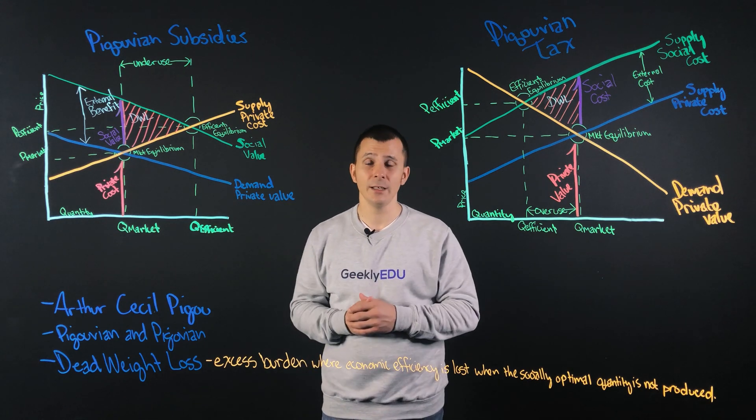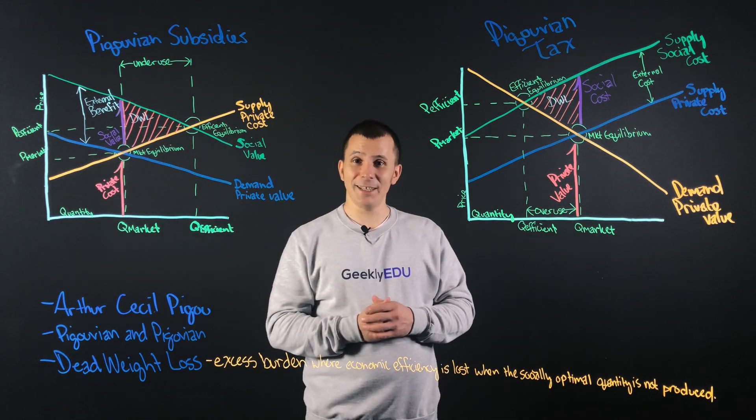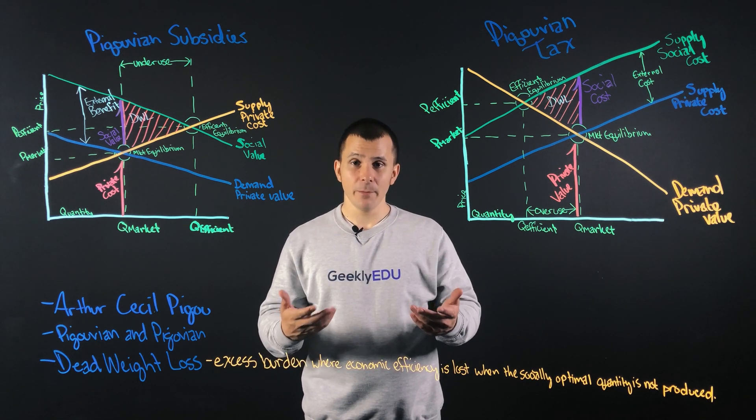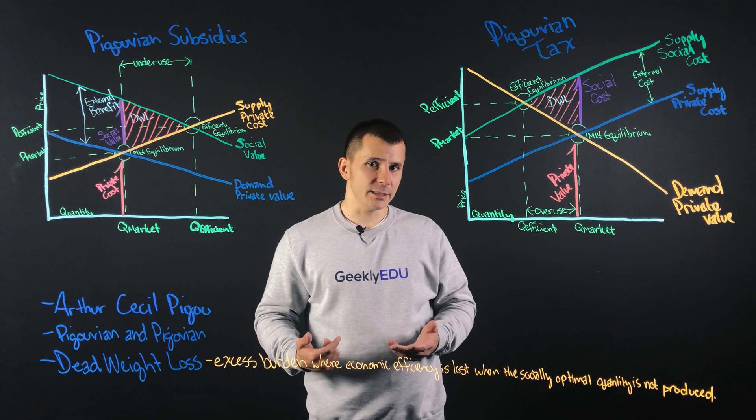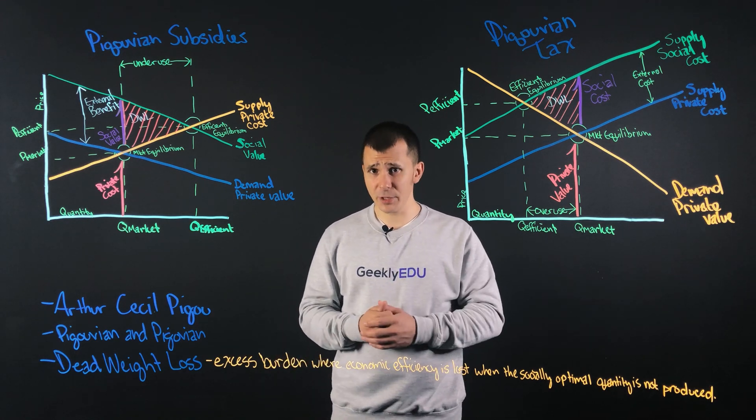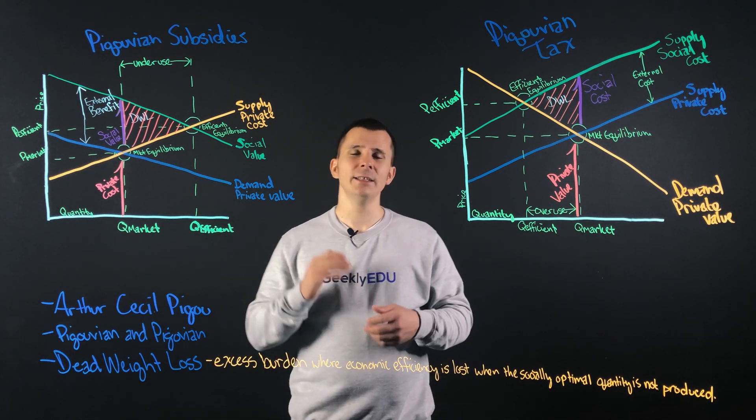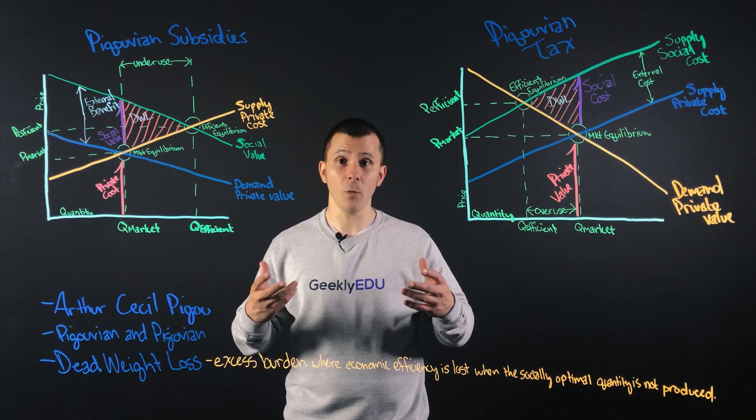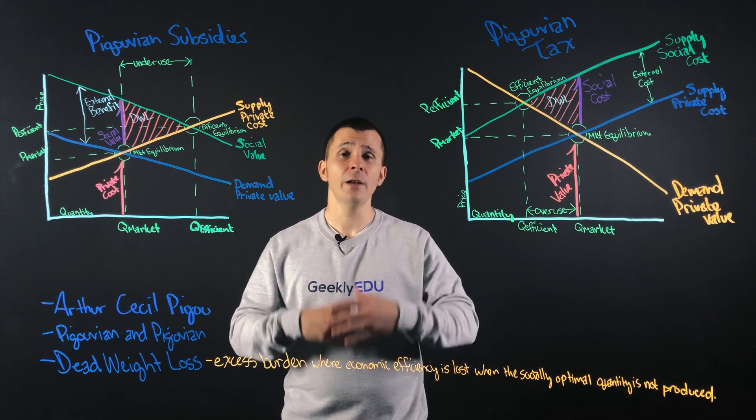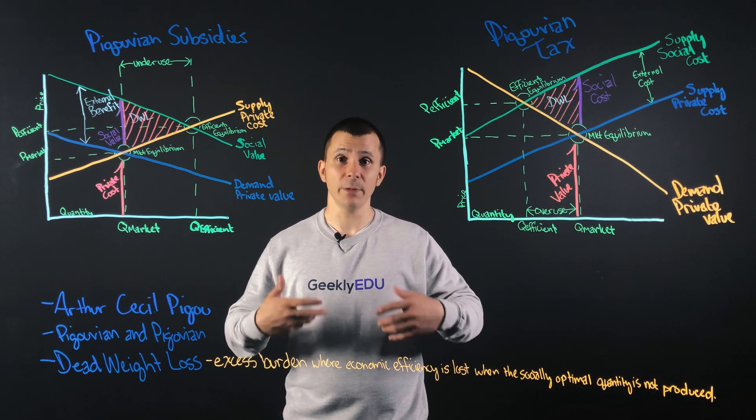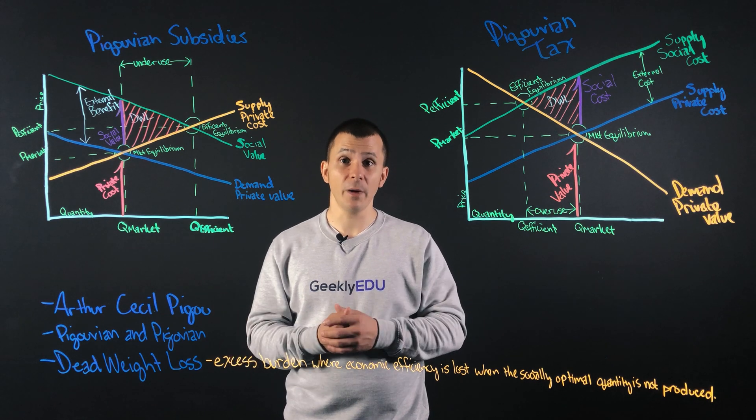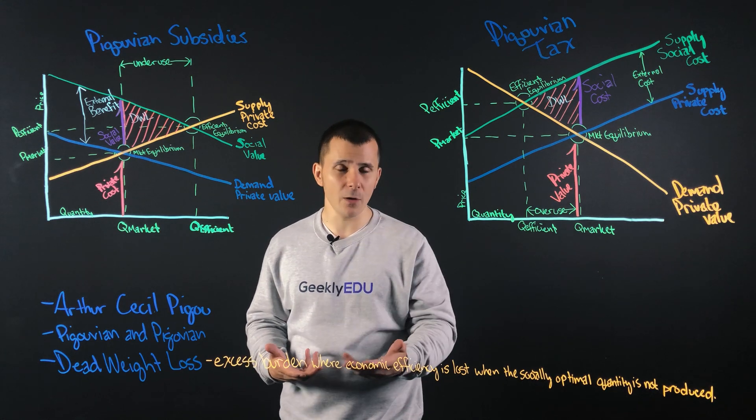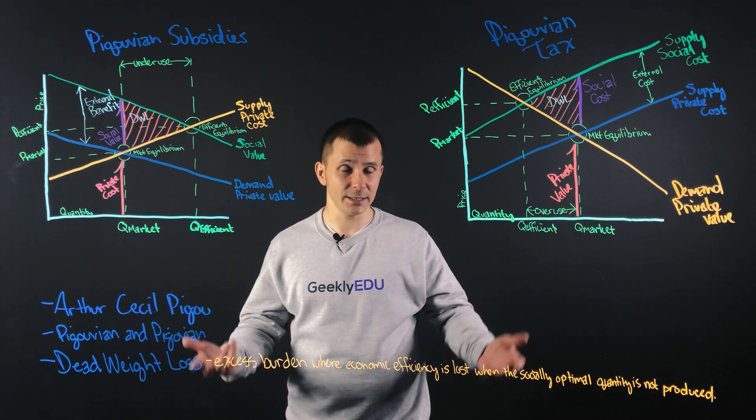First, we'll take a look at Pigouvian subsidies and see how we can improve a system where it helps society, but the demand over time reduces. We'll talk about education here just to make this simple to grasp. Education is one of the driving forces for the economy. Without education, the people cannot work in specialized professions. But what happens when everybody goes through the education system is that the demand ends up becoming low because everybody's already gone through the educational system.